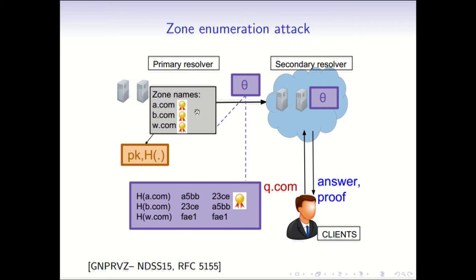This attack is in the context of a zone enumeration attack for DNS queries. In this setting, the administrative name server, who has a table of DNS names to IP address mappings, outsources this table to the secondary resolver, who can also respond to clients' DNS queries — like what is the IP address for a particular domain name. Since this is the authoritative name server and the secondary is not, for integrity purposes, the primary resolver signs every domain name present in the database.